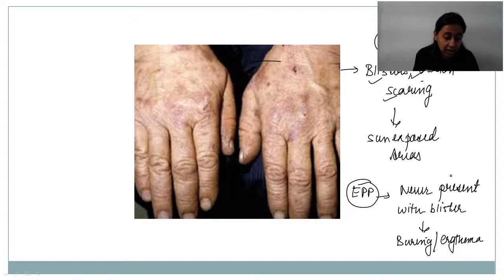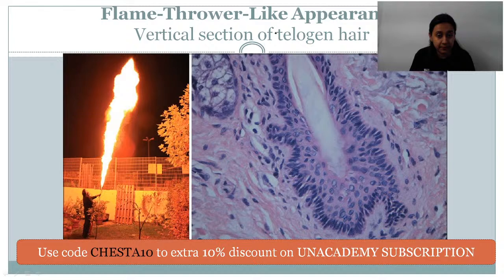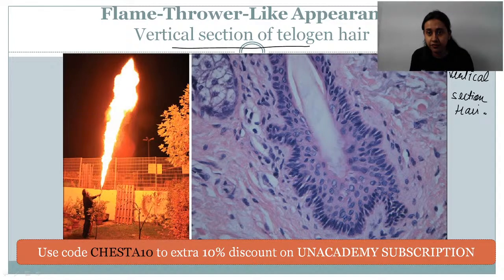The next feature is the flame thrower-like appearance, seen in the vertical (longitudinal) section of the telogen hair. The longitudinal section of the telogen hair gives an appearance of a flame thrower. This is the normal histology of the vertical section of the hair.